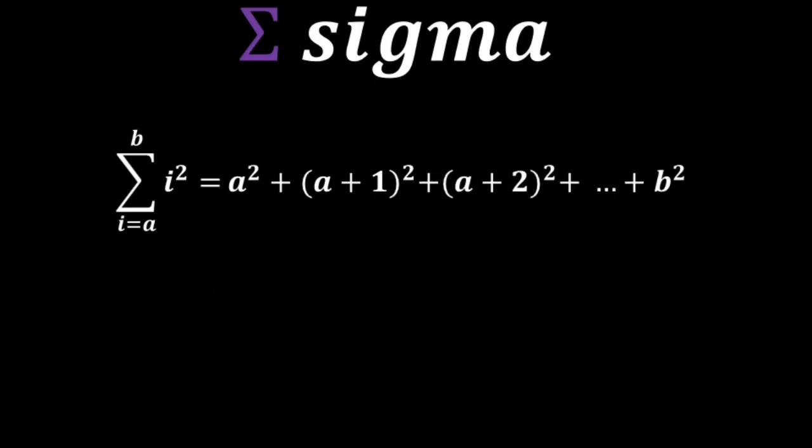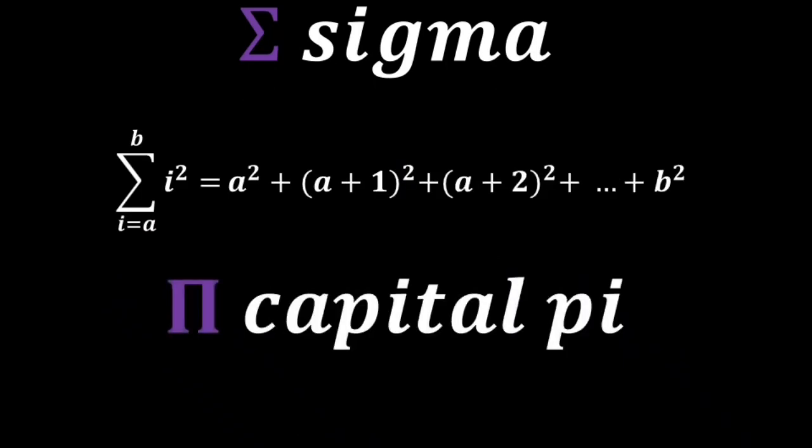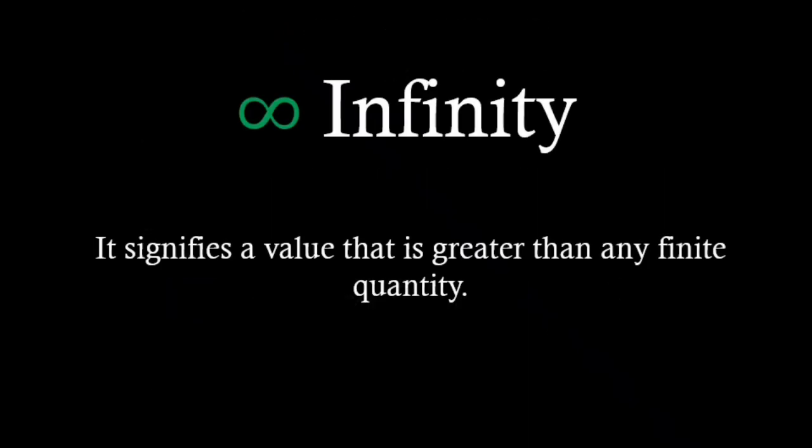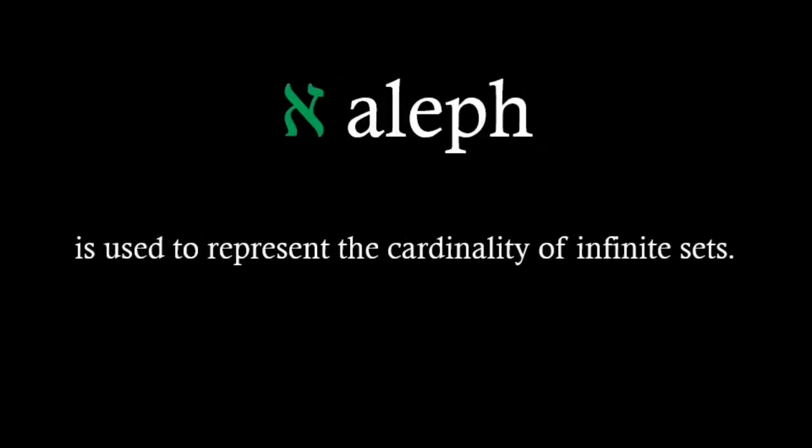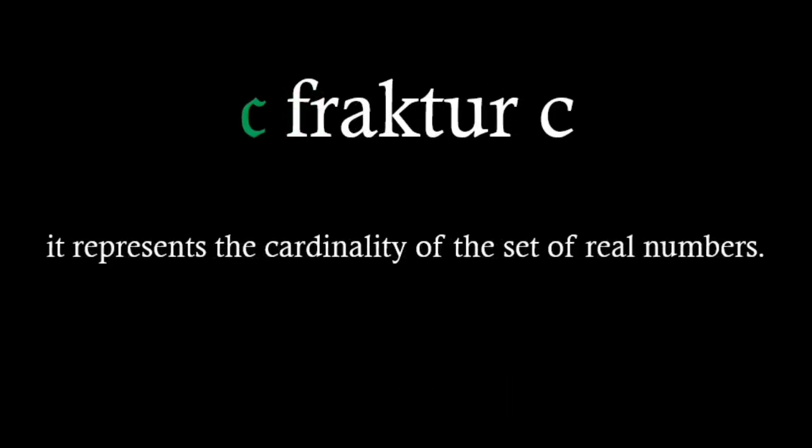Greek letter sigma is used to denote summation of a series of terms. Capital pi works the same as sigma, but it denotes a product. Infinity symbol denotes a concept of unlimitedness. It signifies a value that is greater than any finite quantity. Aleph is used to represent the cardinality of infinite sets. For example, aleph null represents the cardinality of the set of natural numbers. Fracture c also denotes a type of infinity. It represents the cardinality of the set of real numbers.